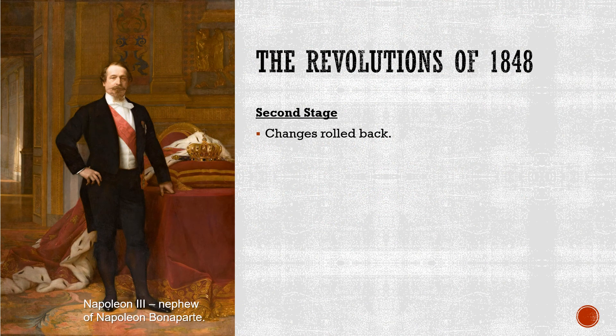The second stage of the revolutions of 1848 saw all these changes essentially rolled back, and largely this was because of divisions within the rebel ranks. Once they had achieved success, the revolutionaries couldn't agree on what came next. This is the problem — the truce between the socialists, liberals, and nationalists was really only about changing the status quo. They all had very different ideas about what the new form would take. Liberals wanted essentially liberal constitutional monarchies; nationalists wanted new countries formed out of these old empires; and socialists wanted socialist revolutions, public ownership of all private property, and major reforms in terms of worker rights.